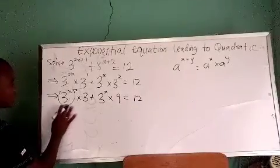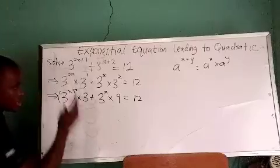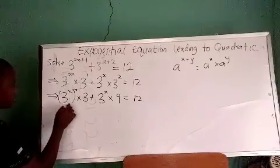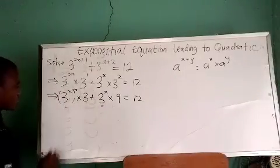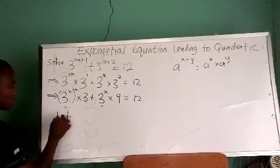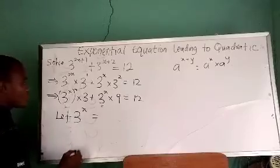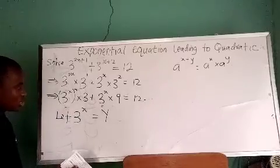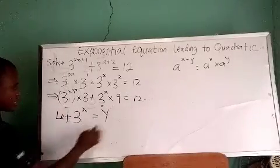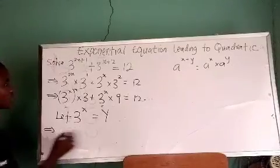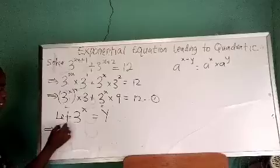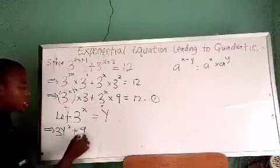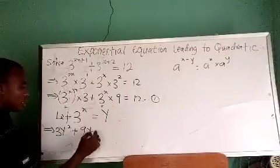From the first and second terms of this equation, we can see that we have something in common — 3 to the power x appears in both terms. So we let 3 to the power x equal a new variable y, which means anywhere you see 3^x, you replace it with y. Therefore this equation turns to y squared multiplied by 3, plus 9 multiplied by y, equals 12.